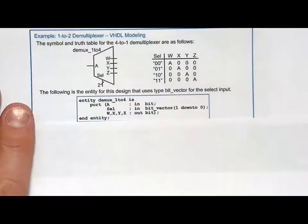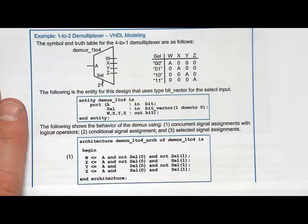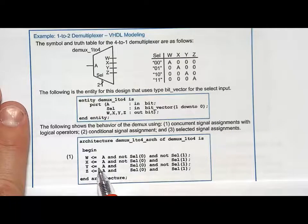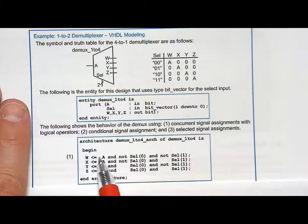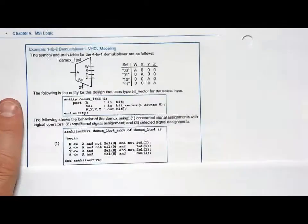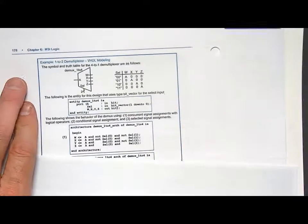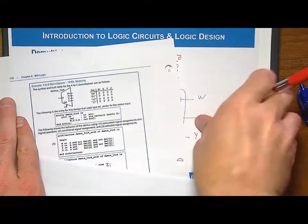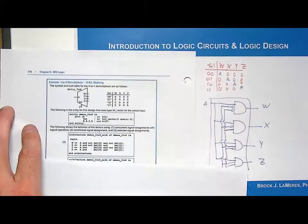So in this situation, the concurrent signal assignment with logical operators is pretty straightforward. You've got W, X, Y, and Z. They each get independent signal assignments because they represent independent logic. And then all I do is I have A anded with, and then I just put in the inverters on the select lines accordingly. So this right here is nothing more than a text-based schematic of this original logic expression, or this logic diagram that we created right here. So I'll put that on the screen right there.